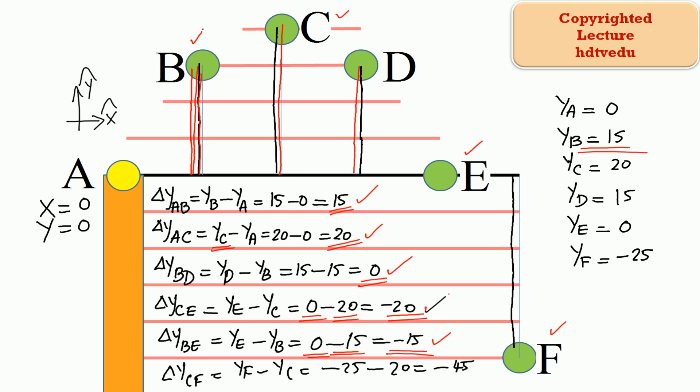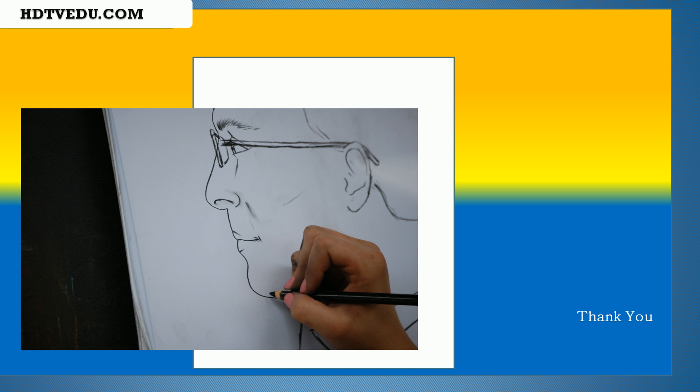What is the vertical displacement between points C and F? Going from C to F: final is F, initial is C. Vertical displacement = final vertical position minus initial vertical position. The final vertical position at F is negative 25 — it is 5, 10, 15, 20, 25 below the origin, so negative 25. The initial position at C is positive 20. So negative 25 minus 20 is negative 45. This is George Matthew signing off. Good luck.